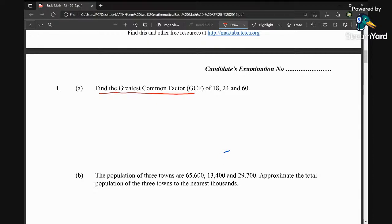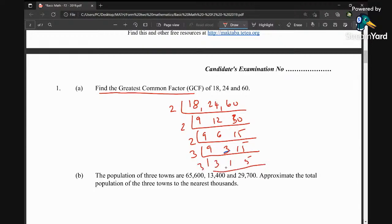We can use prime factorization method. We are going to say 18, 24, 60, so we start by 2: it is 9, 12, 30. By 2 again, 2 is not a common number, so you have 9, 6, 15. You can continue by 2, so it is 9, 3, 15.